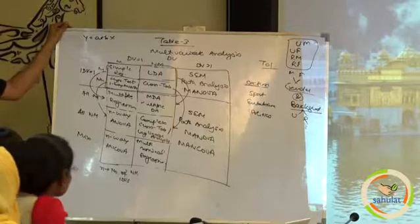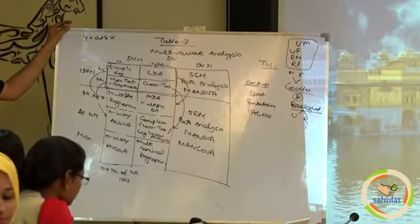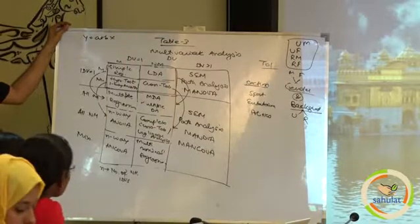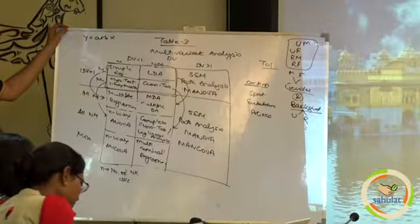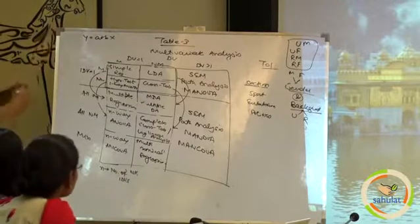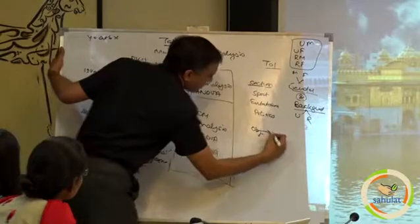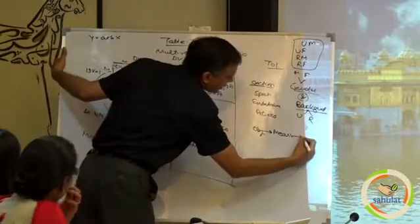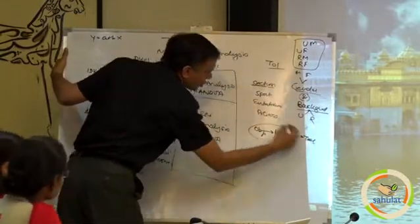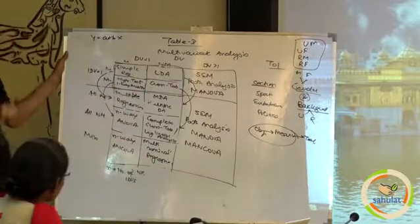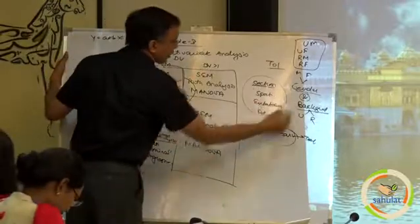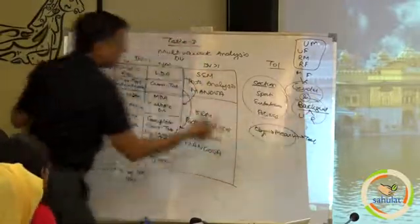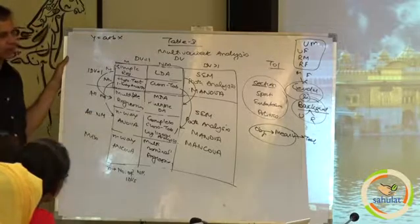The first thing to note is the technique depends on only 2 things: number of variables and measurement of variables. It does not depend on the researcher or the guide. The only freedom you have is if it is an objective, then there is a measurement and then there is a test or technique. You are free in how you will measure, but once you have decided on your measurement and made your questions, then you have no freedom — there will be a particular test or technique.